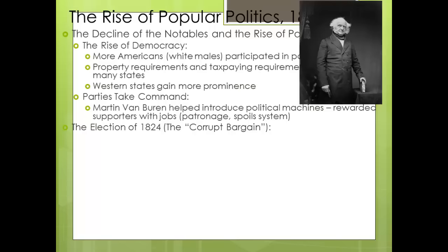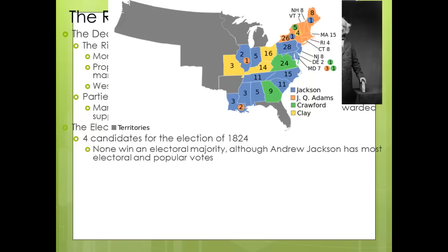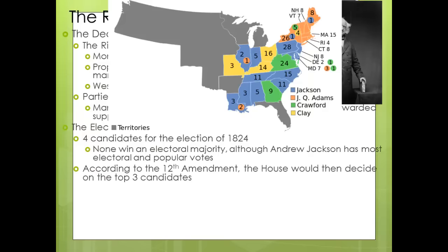In 1824 we have a very important election — the corrupt bargain. Four candidates run for president: the top vote-getter is Andrew Jackson, followed by John Quincy Adams, then William Crawford, and fourth place Henry Clay. Although Jackson got the most votes, he did not get a majority, so according to the 12th Amendment it goes to the House of Representatives, where each state gets one vote to decide among the top three candidates.